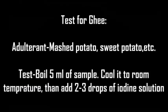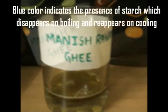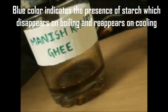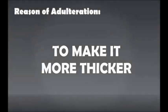Test for Ghee — adulterant: mashed potato, sweet potato, etc. Take 5 ml of sample, cool it to room temperature, then add 2–3 drops of iodine solution. Blue colour indicates the presence of starch, which disappears on boiling and reappears on cooling. Reason of adulteration: to make it thicker.